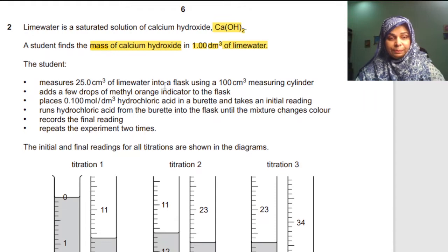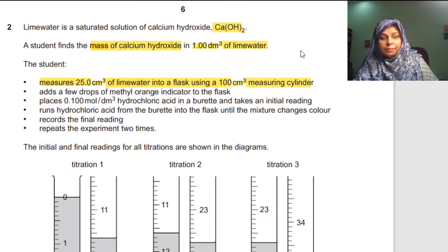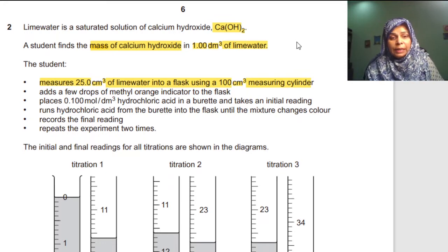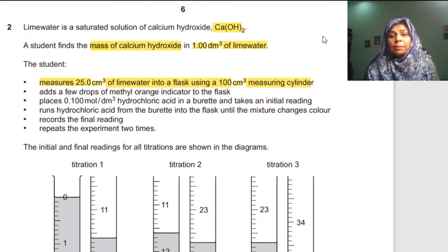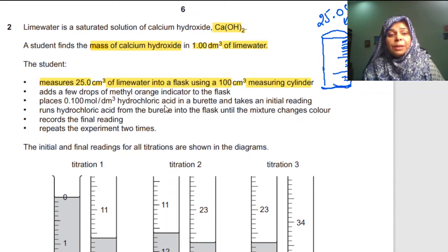The student has done the following steps. Number one: measures 25.0 cm³ of lime water into a flask using a 100 cm³ measuring cylinder. So first of all, lime water of 25.0 cm³ was measured by using the measuring cylinder — also called a graduated cylinder.